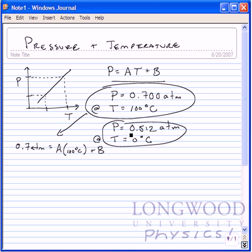And if we look at these and plug these in, we have 0.512 atm equals A times 0 degrees Celsius plus B.